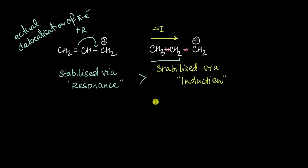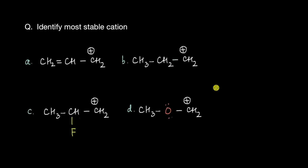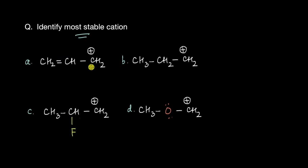Equipped with this knowledge, let us now try and solve a few problems. We have four different cations and we need to figure out the most stable amongst these. Looking at the first cation, we have a pi bond with pi electrons attached to a carbocation, so we can have resonance here.